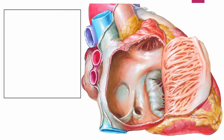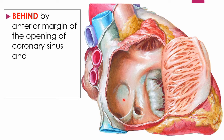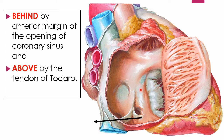Let me show you what is present behind. Behind, it is bounded by the anterior margin of the coronary sinus opening. This is the coronary sinus opening — this is its anterior margin and this is the posterior margin. So behind this triangle we can identify the anterior margin of the coronary sinus. Then above, we can identify the tendon of Todaro. This tendon of Todaro is a rounded collagenous, palpable, subendocardial tendon, which forms the superior boundary of the triangle of Koch.